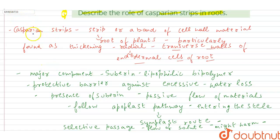We have here Casparian strips, these are the strips or band of cell wall material found in the root of plants, particularly found as thickening present on radial and transverse walls of the endodermal cells of the roots. The major component is suberin, and suberin provides protective barrier against excessive water loss. Presence of suberin allows the passive flow of materials through the symplast pathway. Therefore, there is a selective passage of these solutes, and this is important as it may cause harm to the plants.